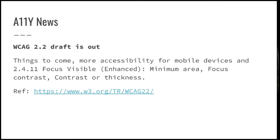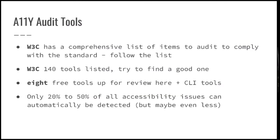Some news from accessibility: there was a draft out for Accessibility 2.2 — WCAG 2.2 — and one of the things is focusable area. So you cannot do what Material Design did to the focus buttons — where you can barely see a bit of a shadow on those buttons. Now there is a strict guideline: there should be a minimum area, there should be focusable contrast, and the focus line should be quite visible. So be aware of that — it's coming probably in a couple of years, maybe delayed a bit by the current situation with the virus.